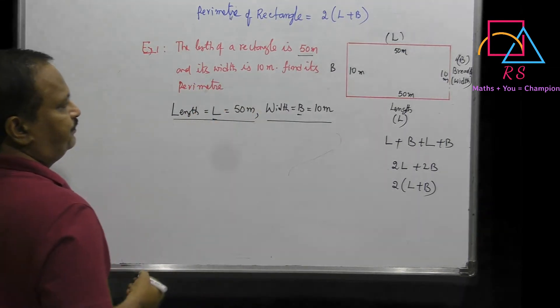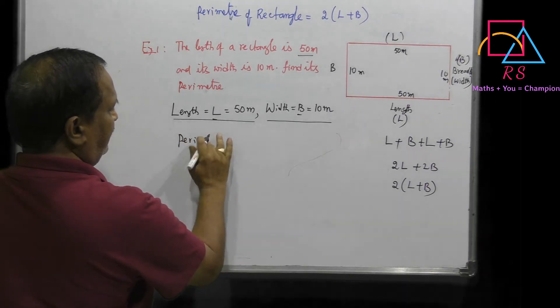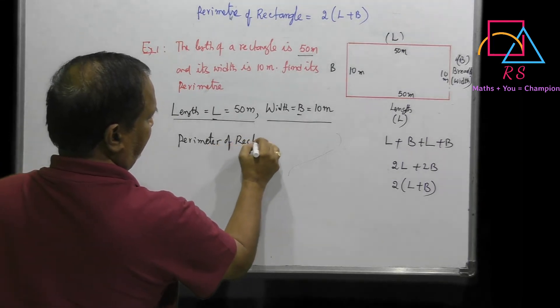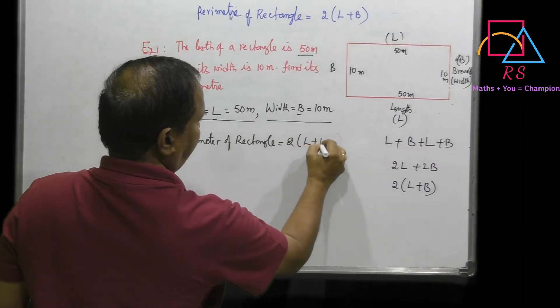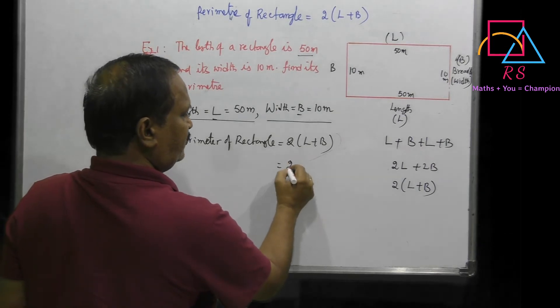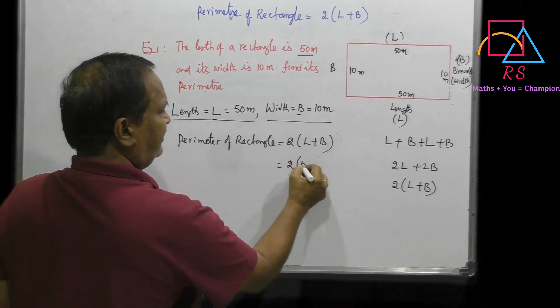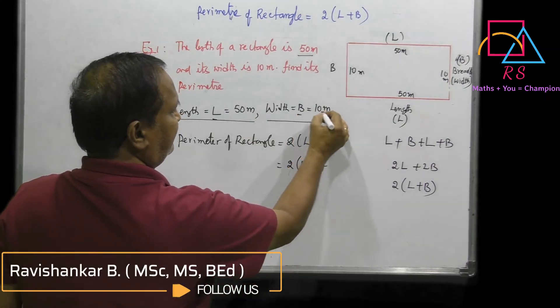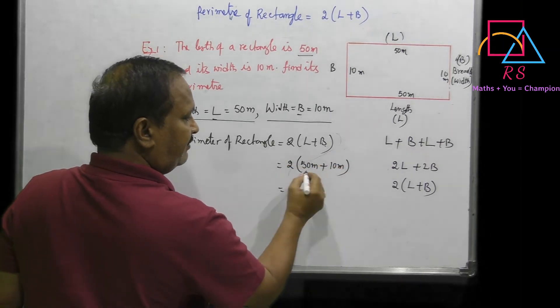Perimeter of a rectangle equals 2(L+B). Using the formula, L should be replaced with 50 meters, and B should be replaced with 10 meters.